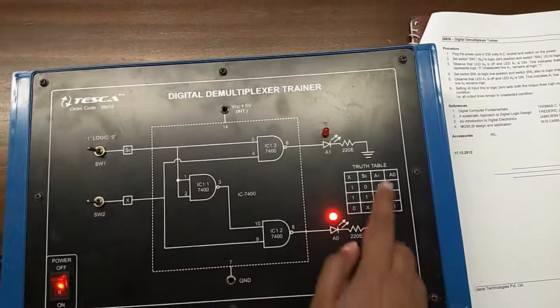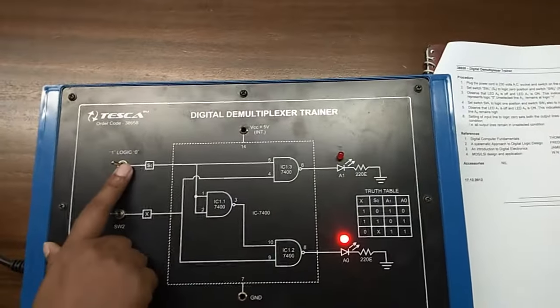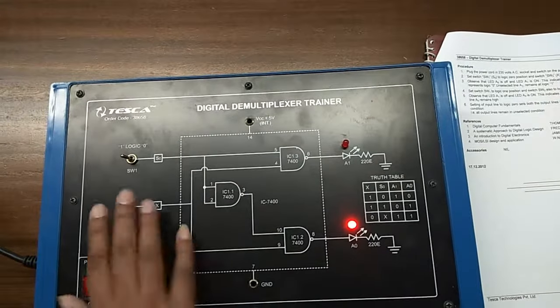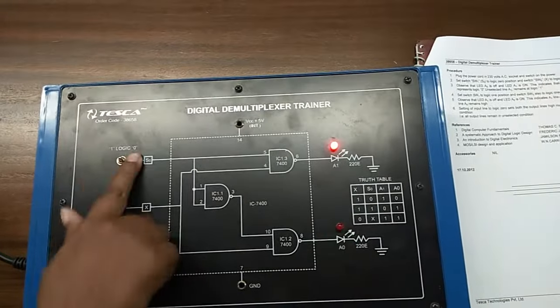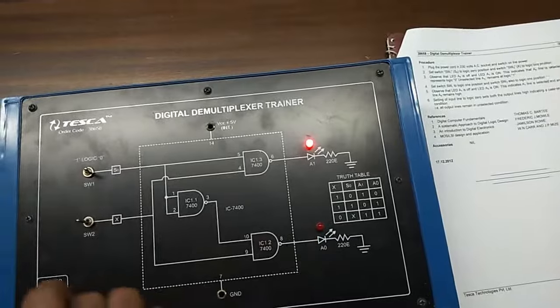Now we will verify this truth table. First, I am setting this to 1 and this to 0, and my A1 is 1 and A0 is 0.